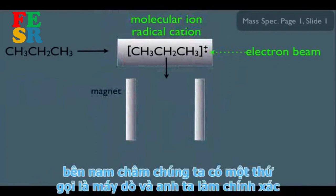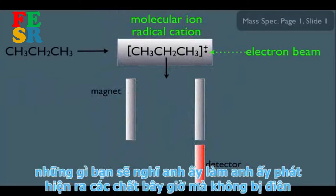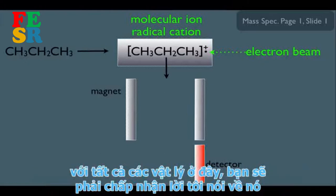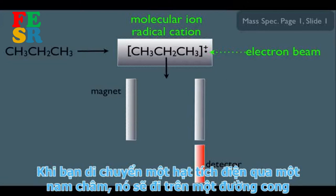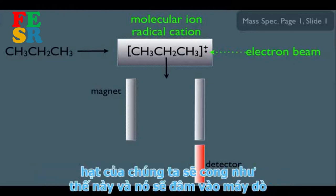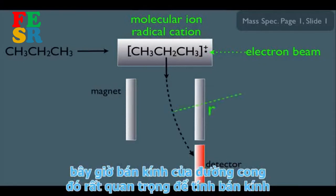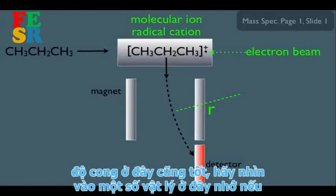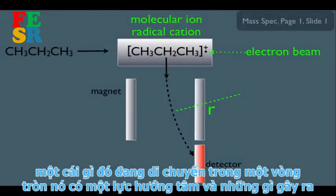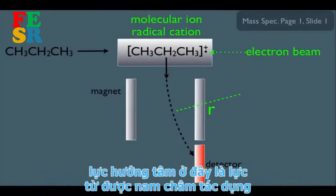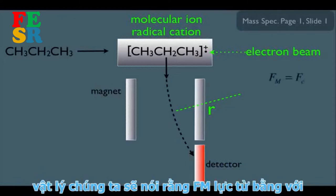We then accelerate that molecular ion through a magnet, and on the other side is a detector. When a charged particle moves through a magnet, it takes on a curved path, hits the detector at a certain location, and the detector measures the radius of that curve. This is important because if something moves in a circle, the magnetic force equals the centripetal force.